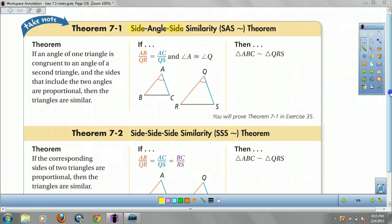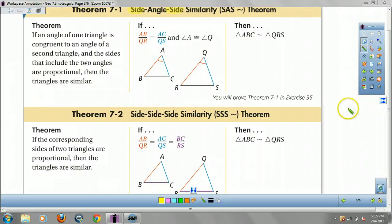And the last one that's usable is actually side, side, side, which states that if all your sides are proportional, then the two shapes are similar. Again, that says if all the sides of two triangles are proportional, then the two triangles are similar.